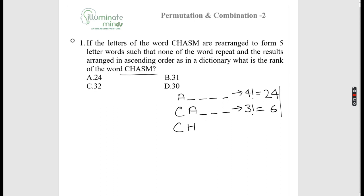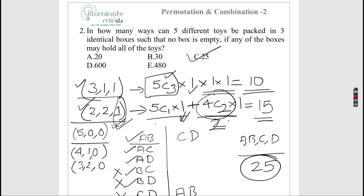The next alphabetically junior character needed is 'A', which I also require. So for the next two characters the answer will be 31 or 32. Alphabetically, CHAMS comes before CHASM, so the rank of CHASM is 32.